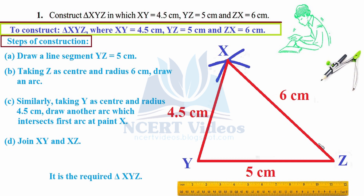Step A is done. Step B: Taking Z as center and radius 6 cm, draw an arc. Fix the needle of your compasses at point Z, open the compasses to 6 cm, and draw an arc like this.